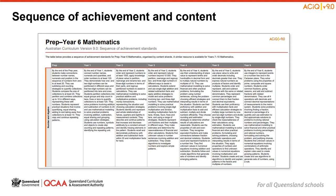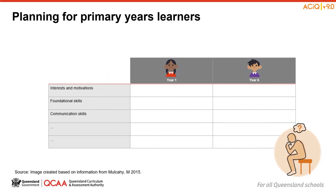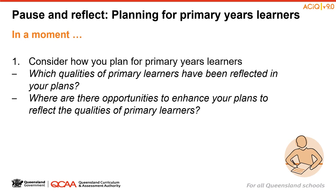For your reference, these sequencing documents also exist for the Year 7 to 10 curriculum for all learning areas and subjects. When developing year-level curriculum and assessment planning across Prep to Year 6, we do so reminding ourselves of our learners. What you can see on screen are some considerations of the qualities of our primary years learners that may influence your planning. Pause now and reflect on the qualities of learners and the influence these qualities have on planning for a Year 1 student compared to planning for a Year 6 student. Now let's take a moment to reflect on how we plan for primary learners in our year-level curriculum and assessment planning.